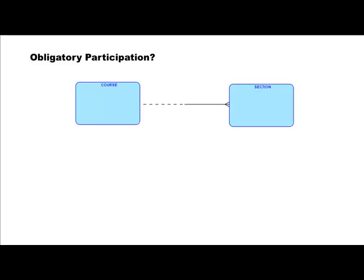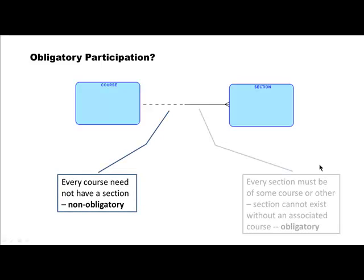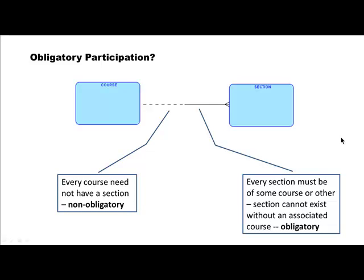Because a course need not participate, we use a dashed line. Section must participate, so a solid line. A course can have many sections — crow's foot. A section can be of only one course — no crow's foot, just a blank. So that's our entity relationship diagram, giving you the explanation just spoken. That's the ER diagram for the course-section situation, though the diagram is still incomplete — we'll shortly see why.